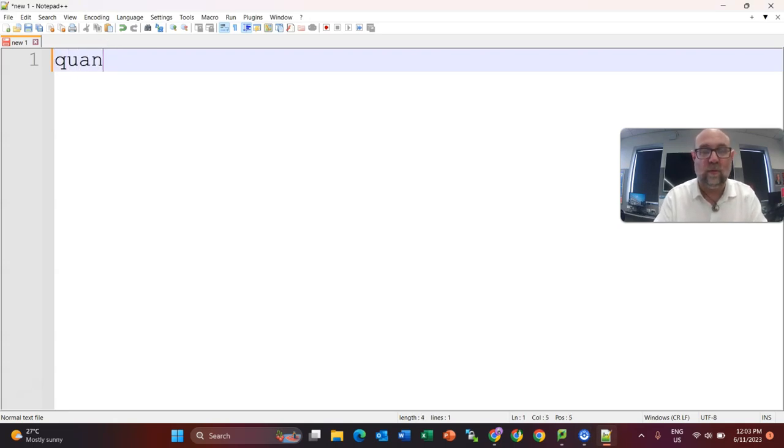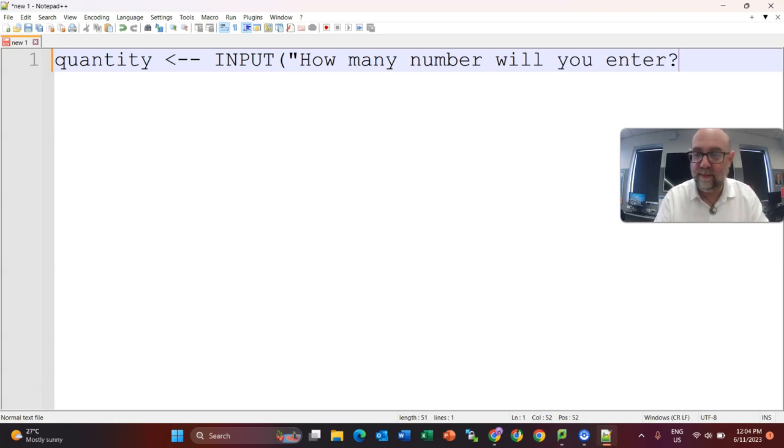So we want to know the quantity. I'm going to call that variable quantity and I'm going to assign the value which is going to come from an input from the user. How many numbers will you enter? There we go. So that's going to create that quantity.